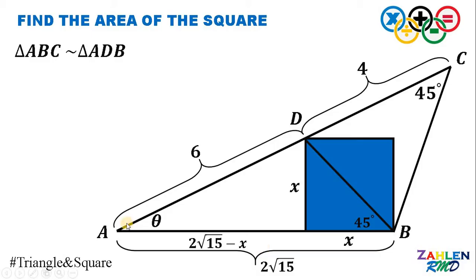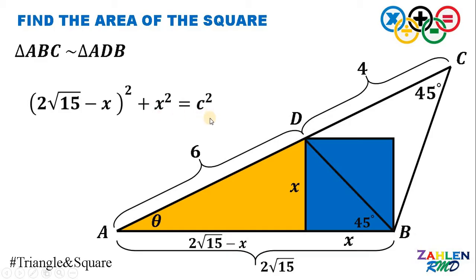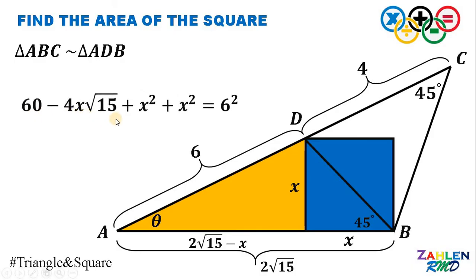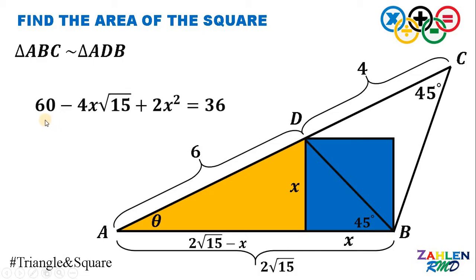Notice that we have a right triangle here. Therefore, we can use the Pythagorean theorem: a² + b² = c². Here, a² and b² correspond to (2√15 − x) and x, and the hypotenuse must be equal to 6. Expanding (2√15 − x)² gives 60 − 4x√15 + x². And 6² gives 36. Combining, x² + x² gives 2x². Subtracting 36 from both sides gives 60 − 36, which equals 24.